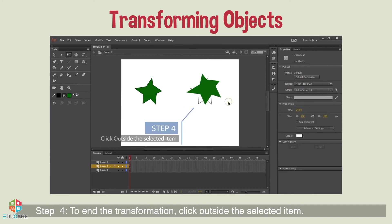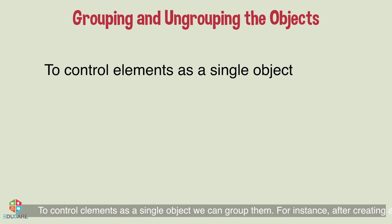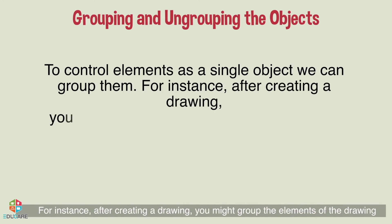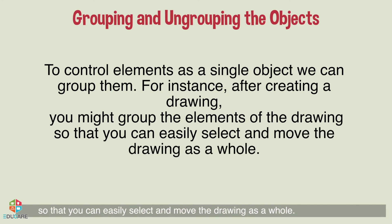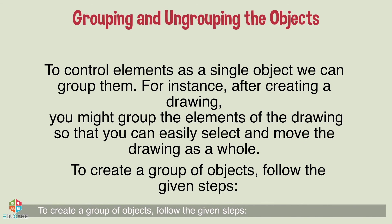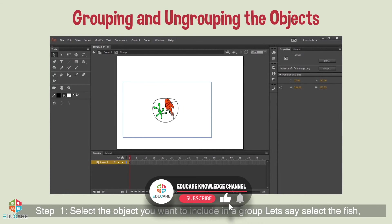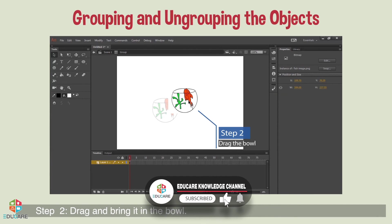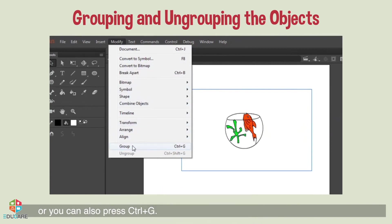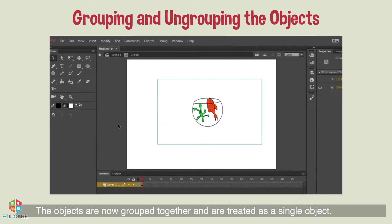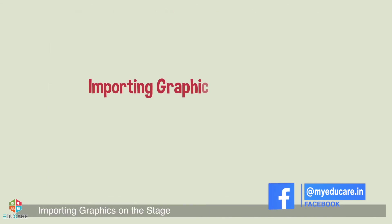Grouping and ungrouping objects: to control elements as a single object, we can group them. For instance, after creating a drawing you might group elements so you can easily select and move the drawing as a whole. Step 1: select the objects you want to include in a group — for example, select the fish. Step 2: drag and bring it into the bowl. Step 3: click on the Modify menu and select Group, or press Ctrl+G. The selection will have a blue outline — the objects are now grouped and treated as a single object.